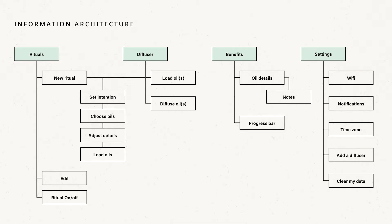Information architecture is basically how you map out the flows of an interaction in a very basic way — what features and information are in what parts of the interface. With a mobile app, it's common to have the first level be the tabs, which you'd normally find at the bottom of an app. After moving a lot of things around, I settled on these final four tabs: rituals, diffuser, benefits, and settings.